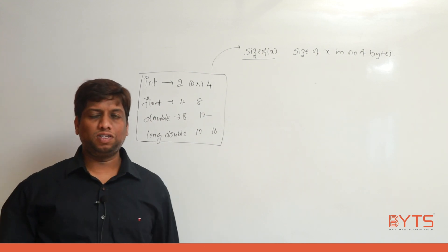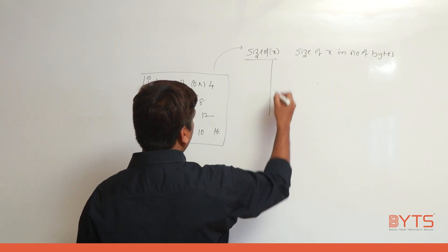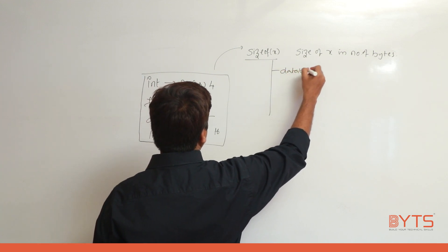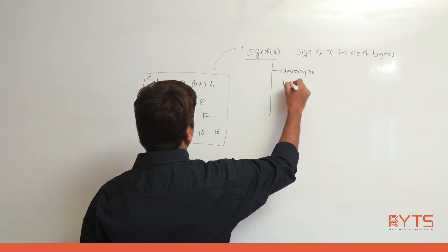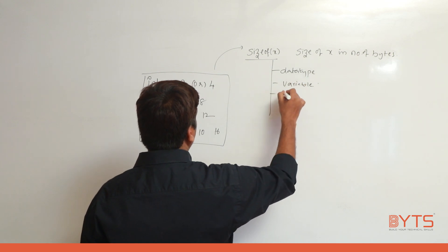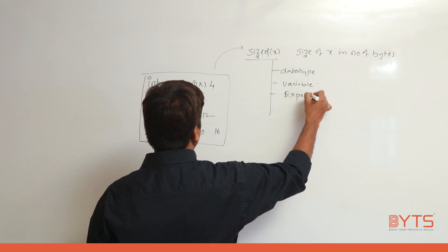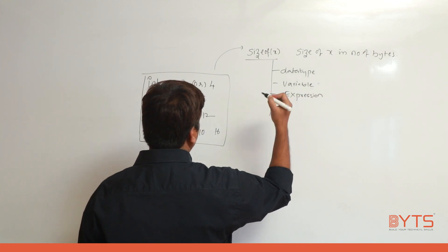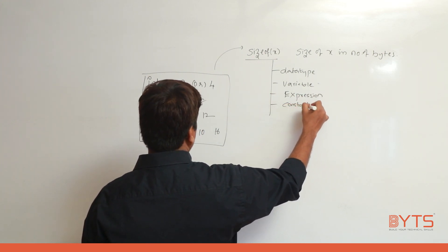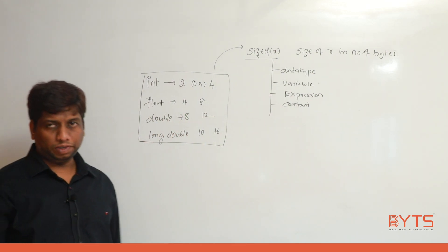What is x? x can be a data type, x can be a variable, x can be an expression, or x can be a constant. That's all — x can be anything. Now we'll see some examples.